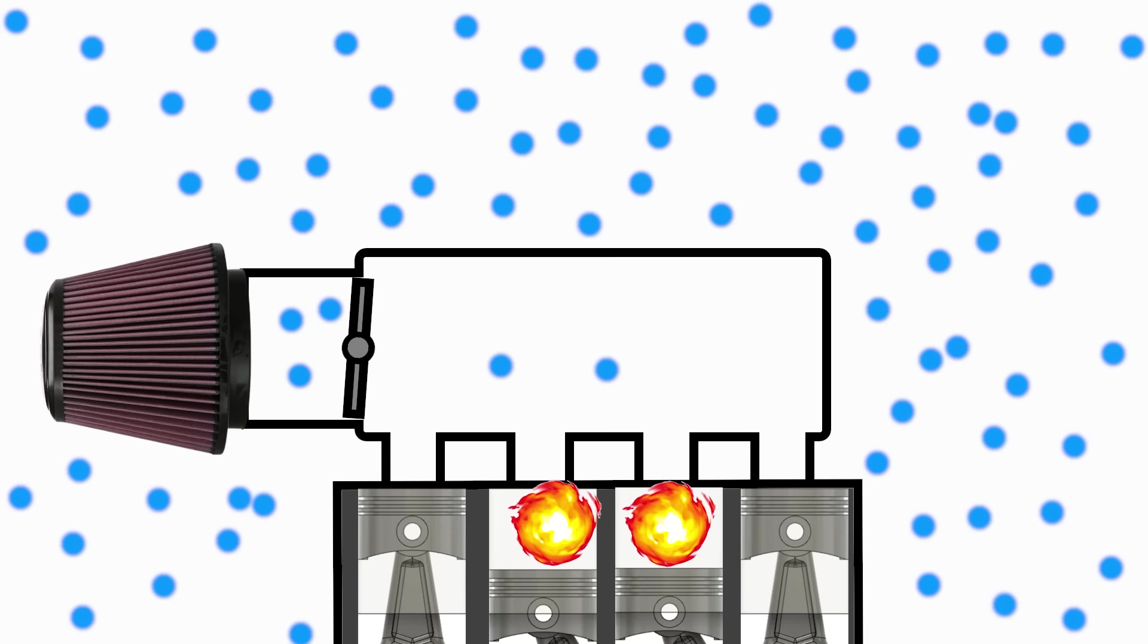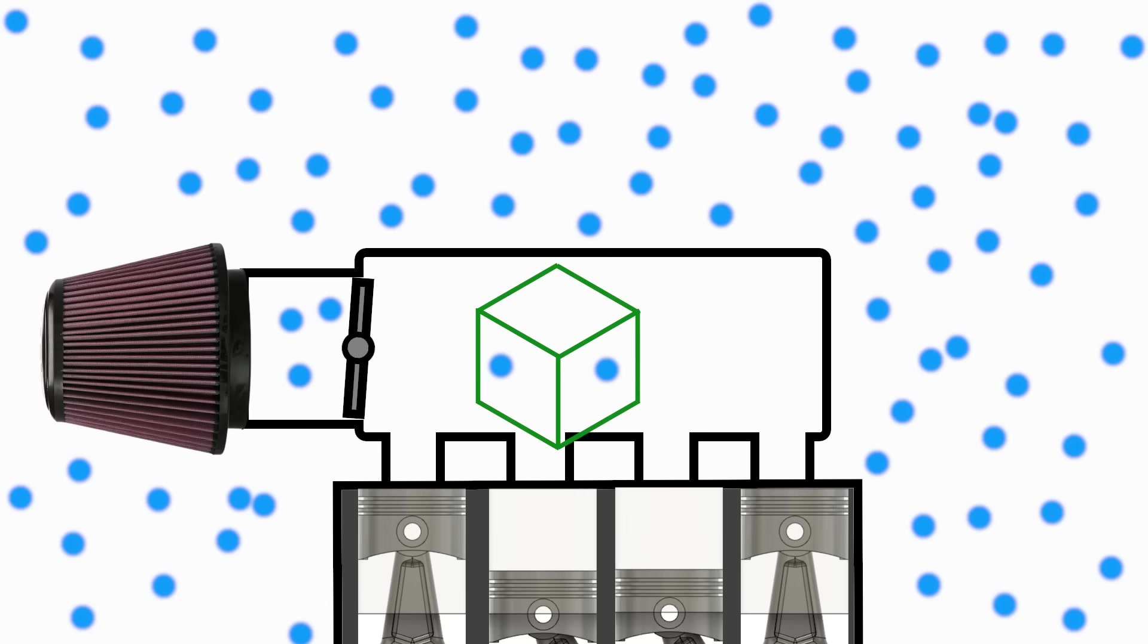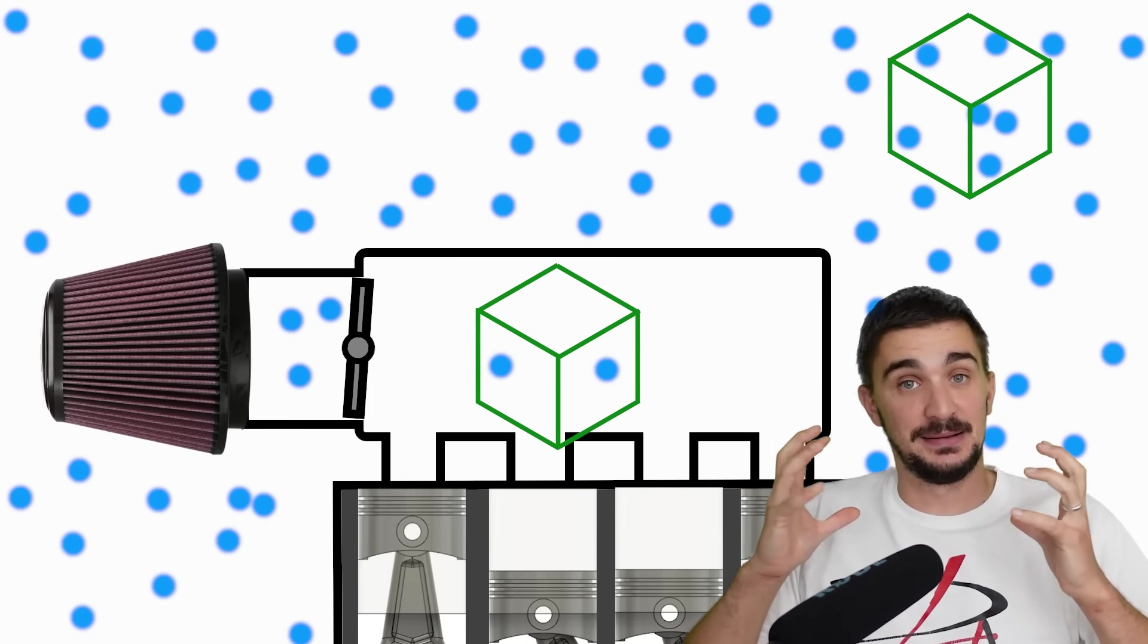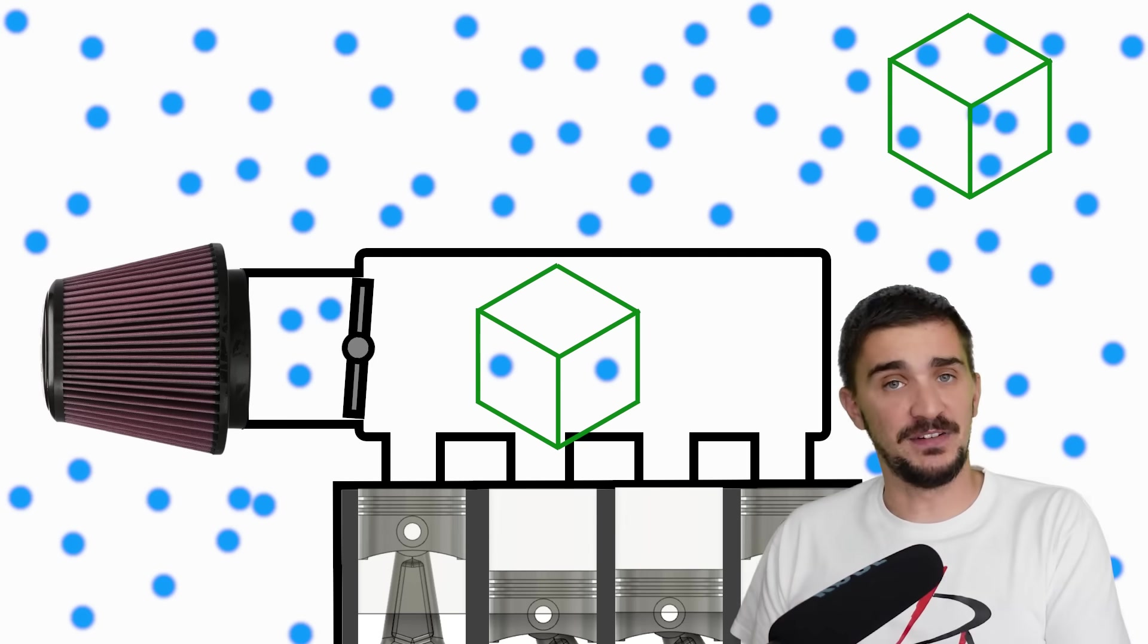The issue is that we are consuming more air than the throttle plate is letting into the intake manifold. So what happens is that inside the intake manifold, a unit of volume, such as a cubic inch or cubic centimeter of air, actually contains less molecules of air than that same cubic inch or centimeter of air outside the engine in the atmosphere. Because we have less molecules of air, we have less air pressure, and we call that a vacuum.